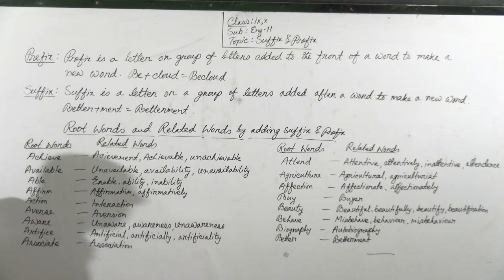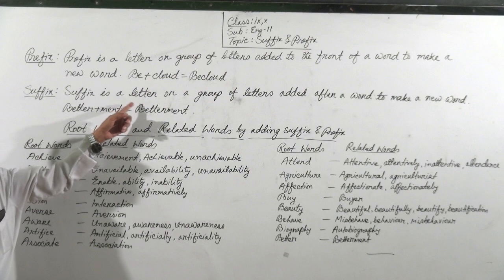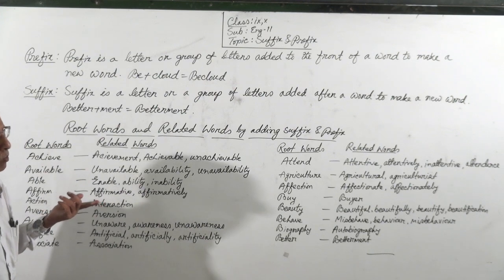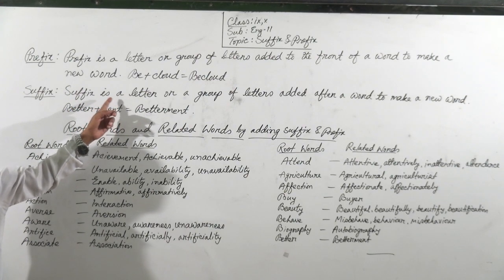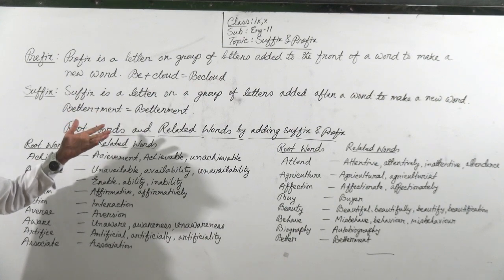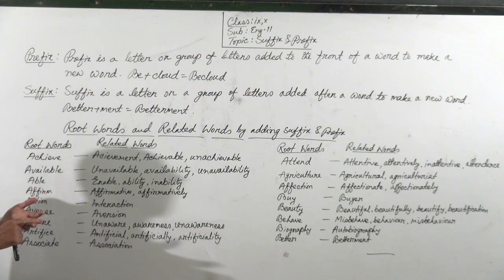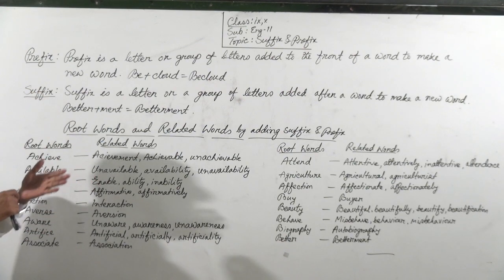So we have understood what prefix is — how it is added to the front of a word to make a new word. Then, suffix. What is suffix? Suffix is a letter or a group of letters added after a word to make a new word. Prefix is added to the front of a word, but suffix is added after a word.